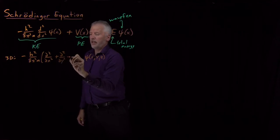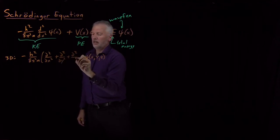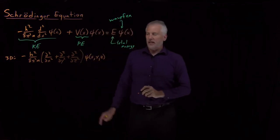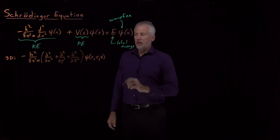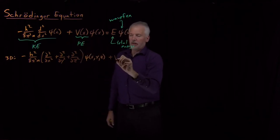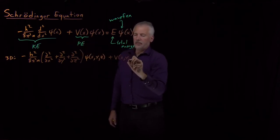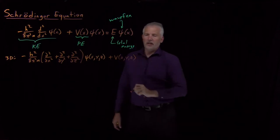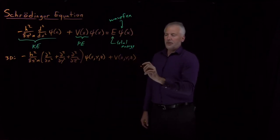The derivatives I need to take are the sum of the second derivatives with respect to x, y, and z altogether. The other terms remain the same, so I still have a potential energy, except now that potential energy depends on the x, y, z position of the particle.